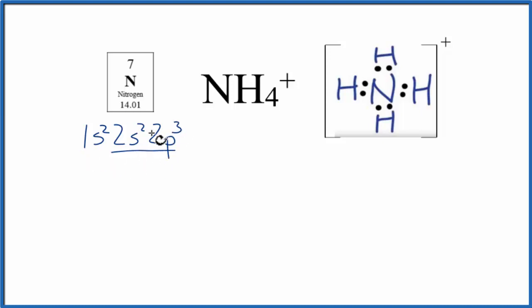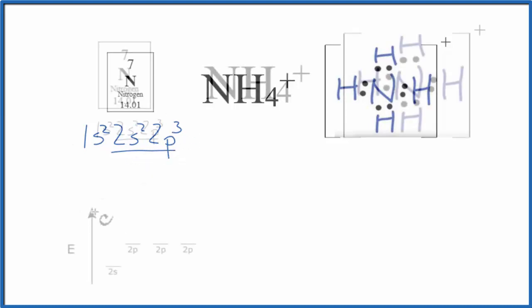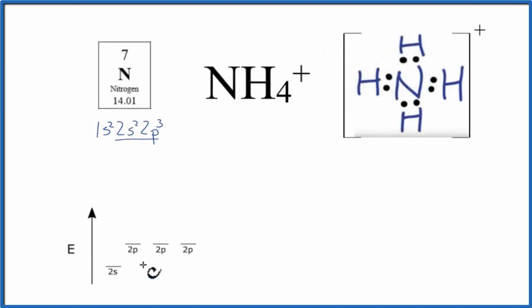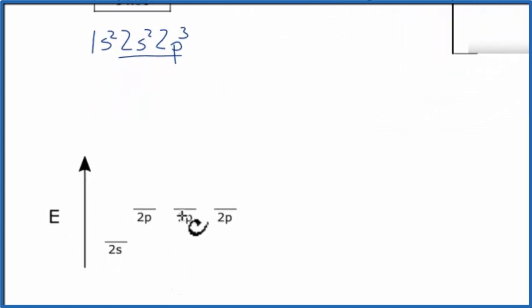So we have our electron configuration and from there we can talk about the energy of each of these electrons. So we're only interested in the second energy level there, the valence electrons. We can see in the S we have two electrons and then in the P we have 1, 2, 3.